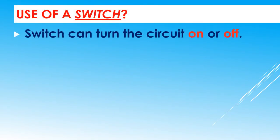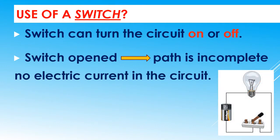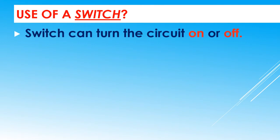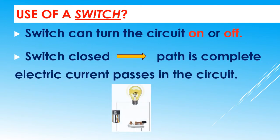Switch. A switch can turn the circuit on or off. If you look at the figure below, the switch is open and the bulb is not lit — this is because the path is incomplete and there is no electric current in the circuit. What if the switch is closed? Then the path is complete and the bulb is lit because the electric current is able to pass in the circuit.